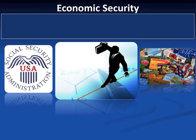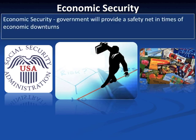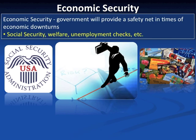The third economic goal is economic security. We're not talking about security from the police force or military — here we're talking about safeguards or safety nets put into place to help when the economy takes a downturn or when people are unable to take care of themselves. We see social programs such as social security, welfare, and unemployment that offer a helping hand to get people back on their feet.